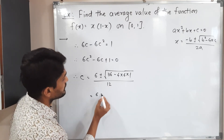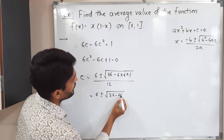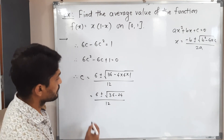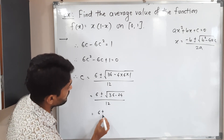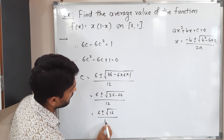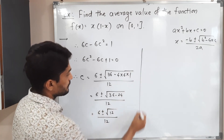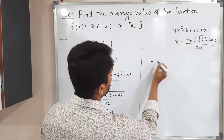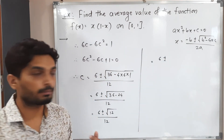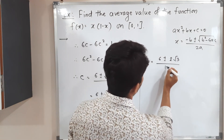So therefore c equals: minus b gives plus 6, plus or minus square root of b squared minus 4ac, which is 36 minus 24, divided by 2a which is 12. This equals 6 plus or minus square root of 12, divided by 12. Now 12 = 4 times 3, so the square root gives 2 root 3, divided by 12.